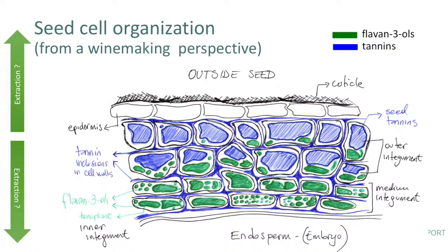Now, let's take a look at the organization at the seed level. The structure here looks substantially different. First and foremost, the cuticle is a little bit thinner, but nevertheless it's hydrophobic. That means that in order for us to extract the compounds from the seed, we need to dissolve this cuticle. Ethanol might be a candidate, but an important question is: what concentrations of ethanol will allow us to dissolve this cuticle? I'll touch on that towards the end of the presentation.